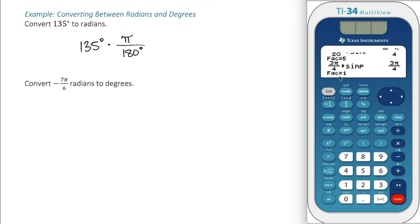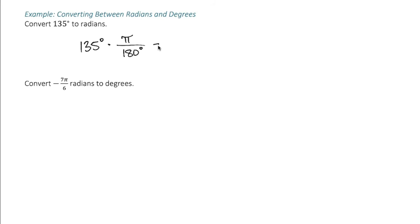Once this factor says one, you know that you are simplified. The answer is 3 pi over 4.